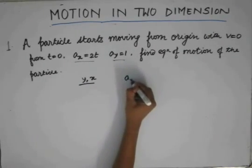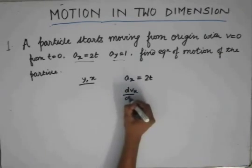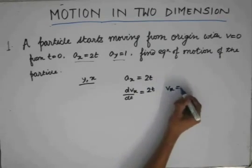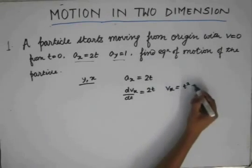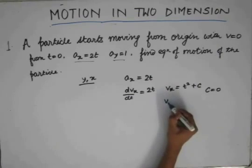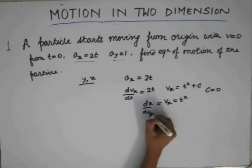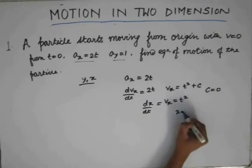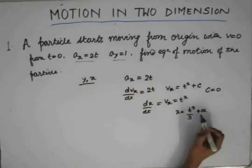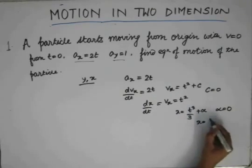Let's solve the problem. The acceleration in the x-direction is given by 2t, so I can write dVx/dt equals 2t. Integrating, I get the velocity in the x-direction as t squared plus a constant c. Since the initial velocity is zero in the x-direction, c equals zero. So Vx equals t squared. Since velocity in the x-direction is dx/dt, integrating again gives x equals t cubed by 3 plus a constant alpha. Since the particle starts from the origin, at t equals zero the x-coordinate is zero, so alpha equals zero. This gives us x as a function of t.